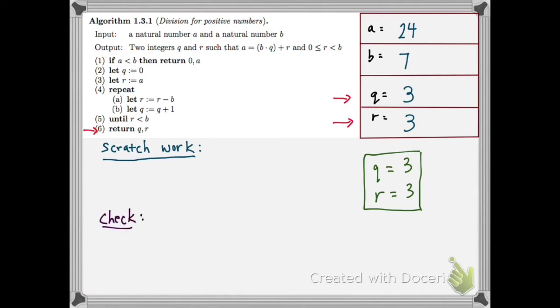If you have time, you should always check your work. So the R and the Q that are returned are supposed to satisfy these two conditions. So 0 is less than or equal to R is less than B. So you check, is 0 less than or equal to 3, which is strictly less than 7? Yes.